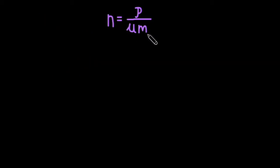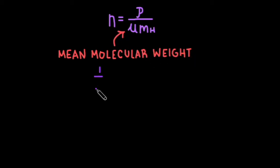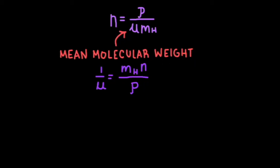Number density relates to mass density as N equals rho over mu times M, where mu is the mean molecular weight. So 1 over mu is equal to MN over rho.